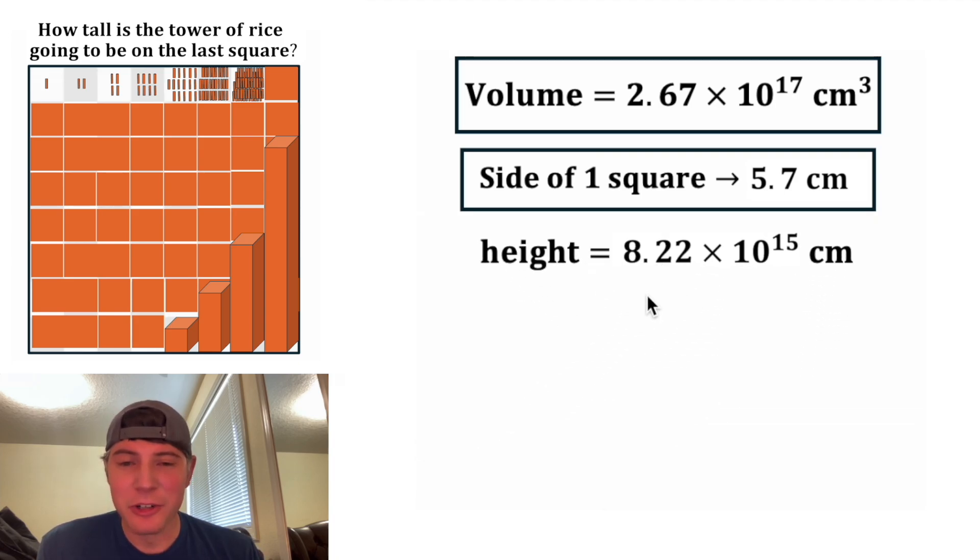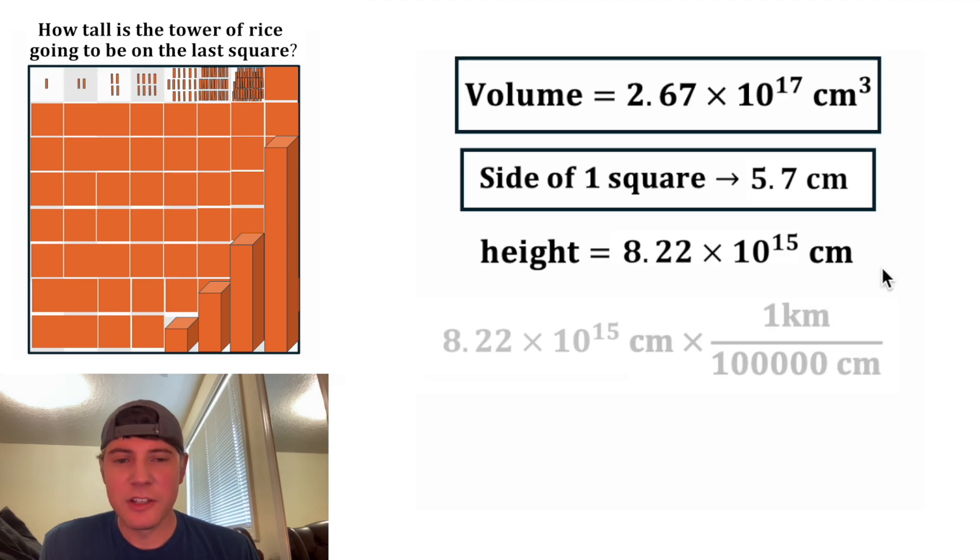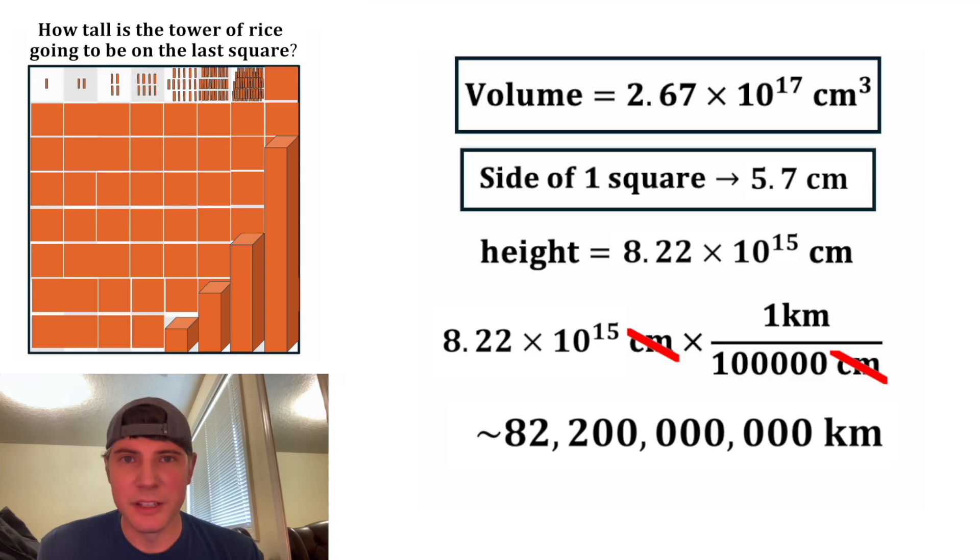Technically, we're done, but I don't know how big 8.22 times 10 to the 15 centimeters is. So let's convert it to kilometers. There's one kilometer per 100,000 centimeters. So we can multiply our distance times this conversion ratio. These centimeters are going to cancel each other out, and we end up with 82.2 billion kilometers. That's a tall pile of rice. It would reach all the way to the sun 550 times. How exciting.